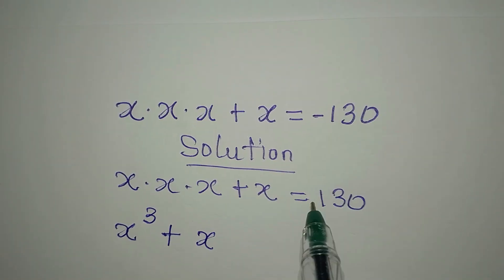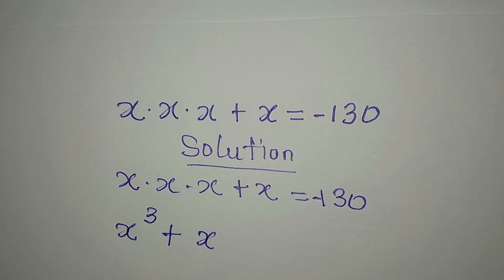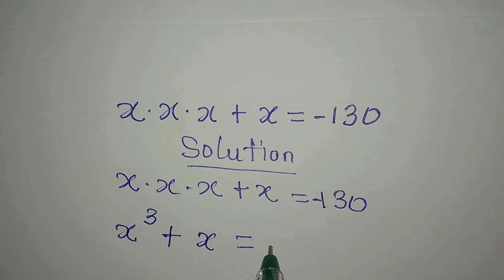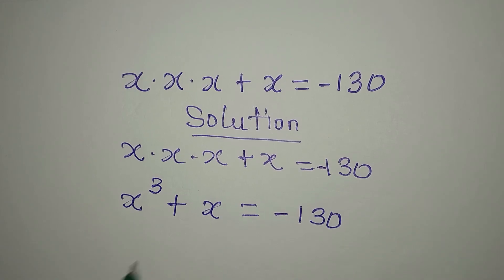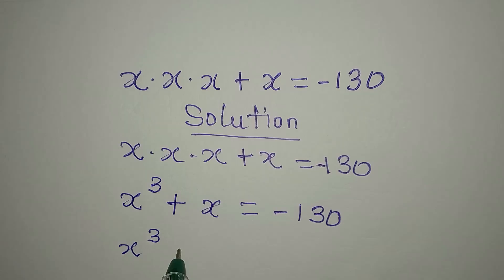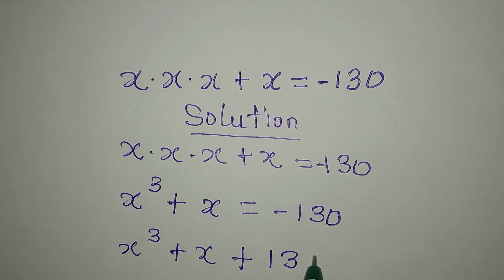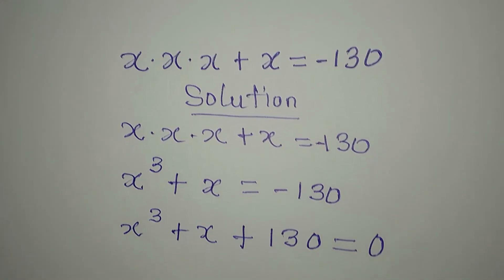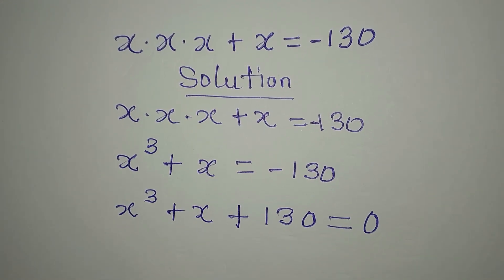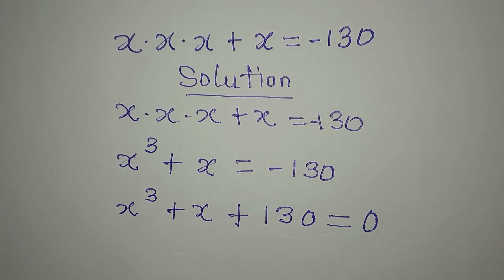This is equal to negative 130. Now the next thing is to bring this to the left. So if we do that, we will have x to the power of 3 plus x, and this will become plus 130, which is equal to zero, because nothing is on the right hand side.